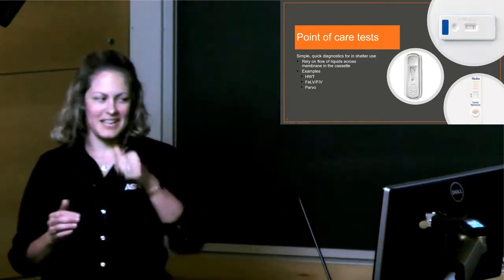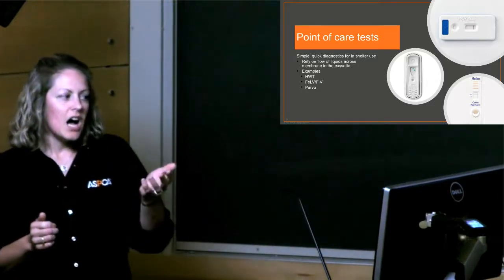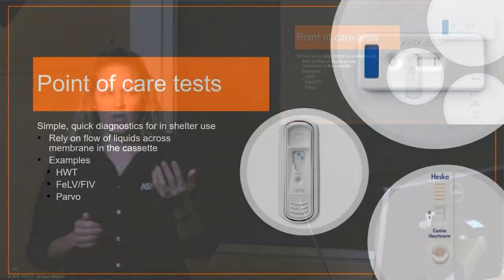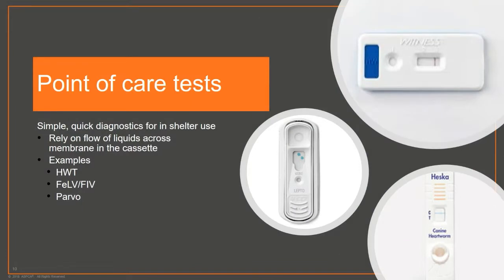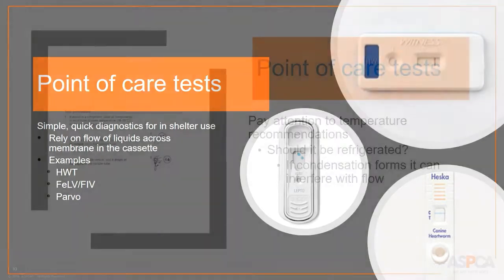Now moving on to point-of-care tests — these are simple, quick diagnostics you can do right in the shelter without sending out to a lab. They rely on the flow of fluids across a membrane inside a cassette. Typical examples include heartworm tests, parvo tests, and feline combo tests that you're probably used to using in the shelter.